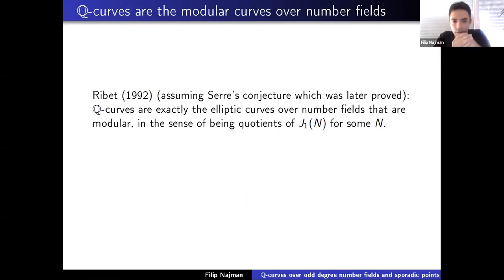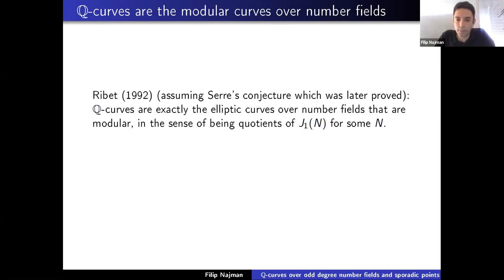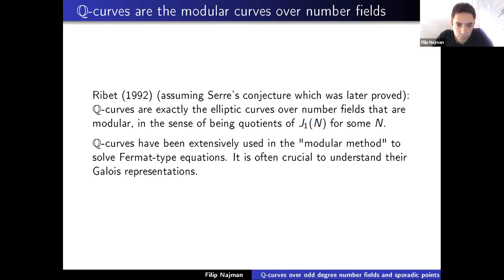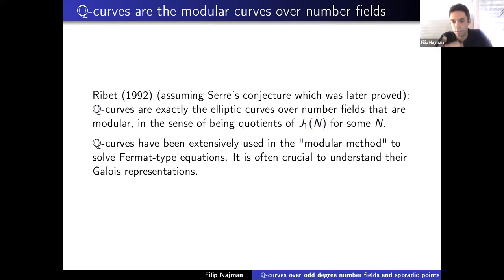Why look at Q-curves? I'll give two motivations. First, Ribet proved in 1992 that Q-curves are exactly the elliptic curves over number fields that are modular in the sense of being quotients of J_0(n) for some n. Second, Q-curves have been extensively used in Diophantine equations, particularly Fermat-type equations, via the modular method: one constructs a Frey curve which is often a Q-curve, and one needs to understand its Galois representation — in particular, whether it's irreducible.